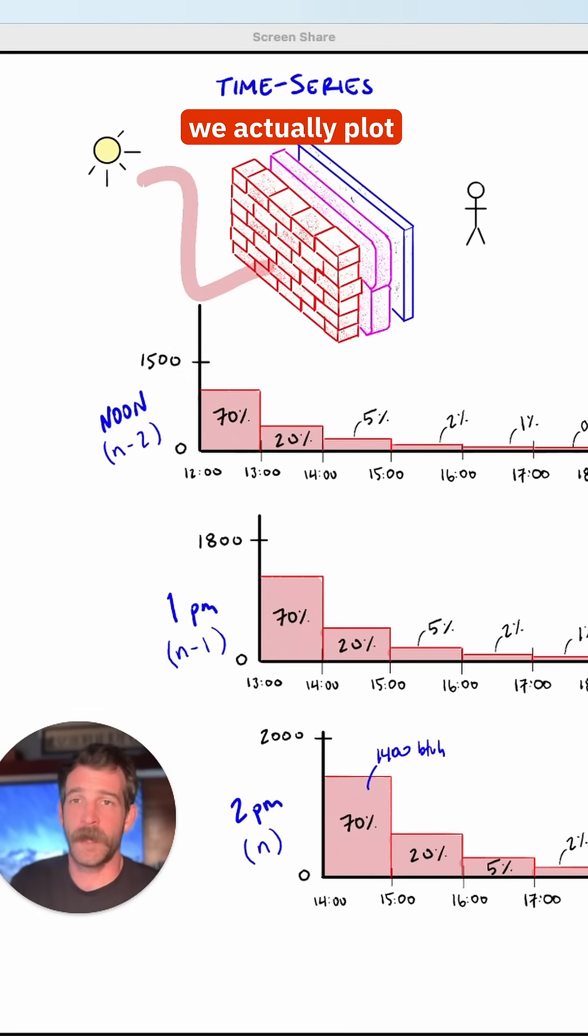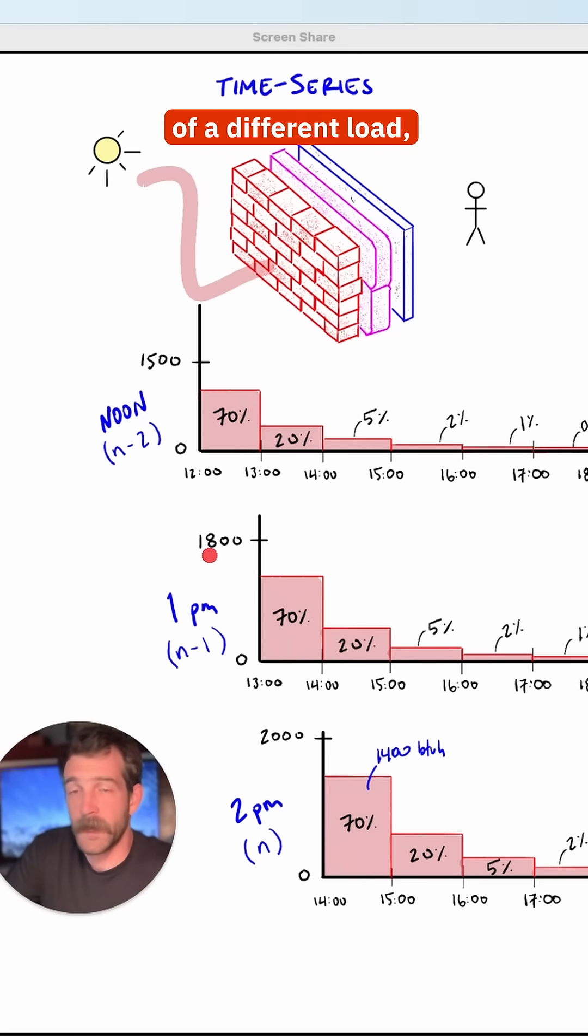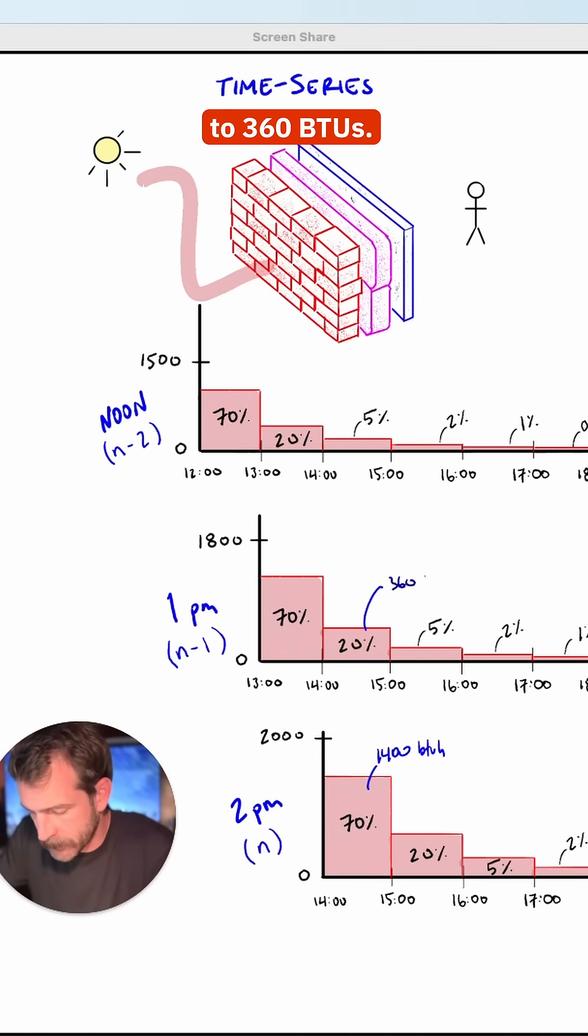And when we calculate using time series, we actually plot this out a full 24 hours previous to the hour for which we're calculating load. So if I'm calculating for 2 p.m., now I go back an hour, and it's not the same instantaneous load. The load was different at 1 p.m. So I'm going to take 20% of a different load, which comes out to 360 BTUs.